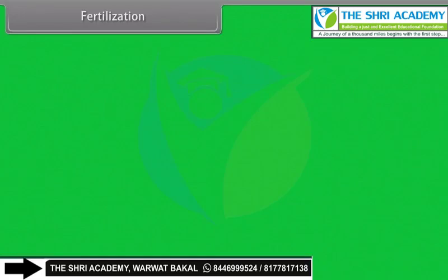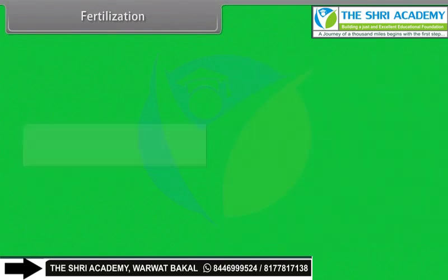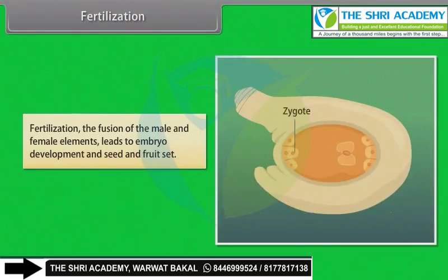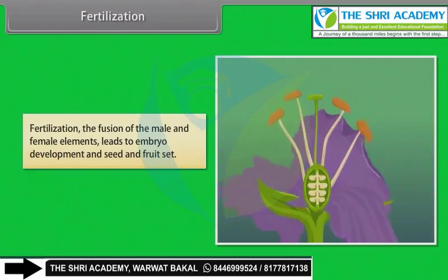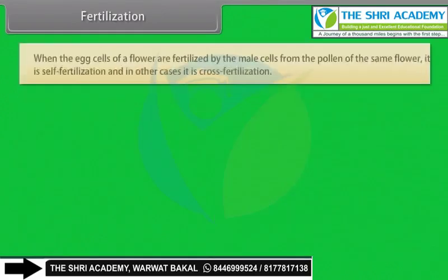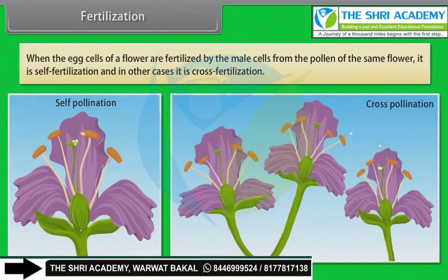Fertilization: The pollen tubes carry the male gametes to the egg cells in the ovules. The fusion of the male and female elements leads to embryo development and seed and fruit set. When the egg cells of a flower are fertilized by the male cells from a pollen of the same flower, it is self-fertilization, and in other cases it is cross-fertilization.